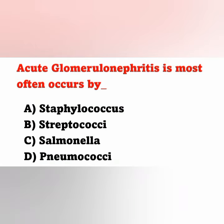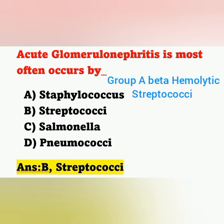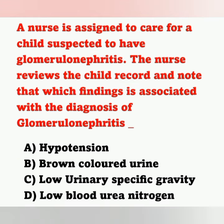Next question: acute glomerulonephritis most often occurs due to which organism? Options: A: Staphylococcus, B: Streptococcae, C: Salmonella, D: Pneumococcae. The causative organism is option B, Streptococcae. Glomerulonephritis is caused by group A beta-hemolytic Streptococcae.